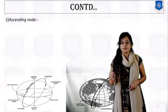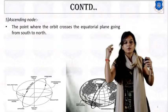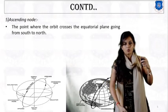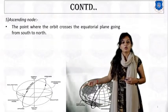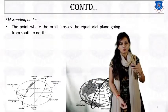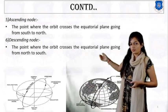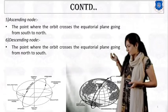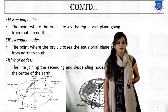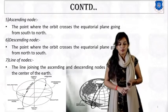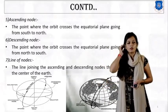Fifth: what is the ascending node? The point which crosses the equatorial plane from south to north is called the ascending node, and the reverse is called the descending node — the point where the orbit crosses the equatorial plane from north to south.